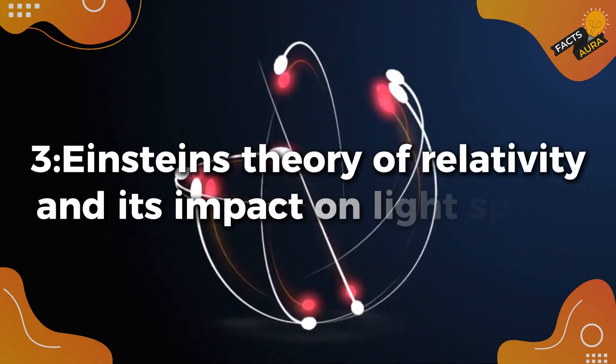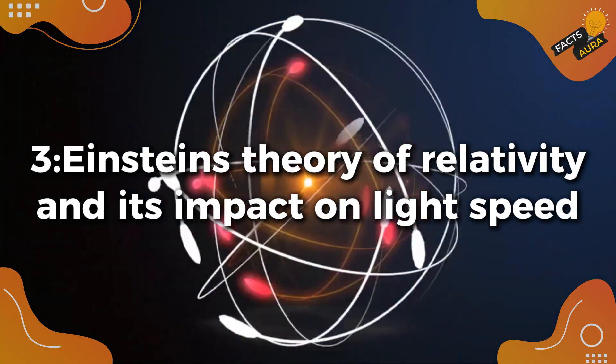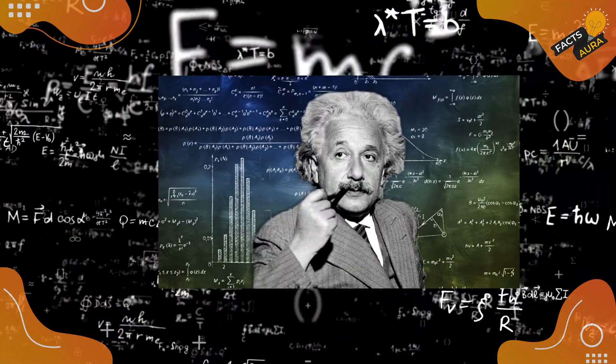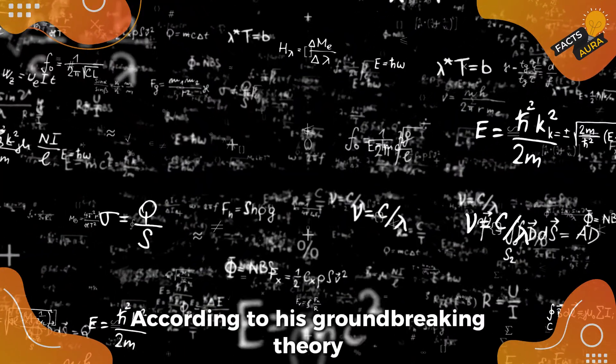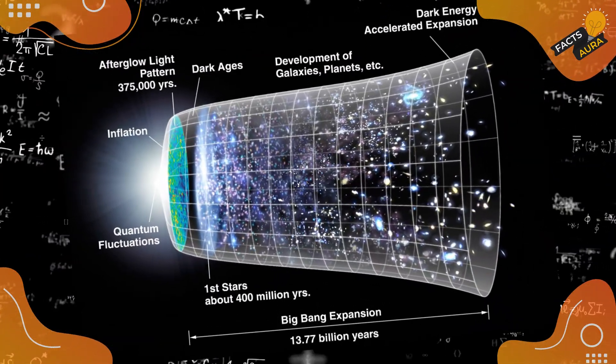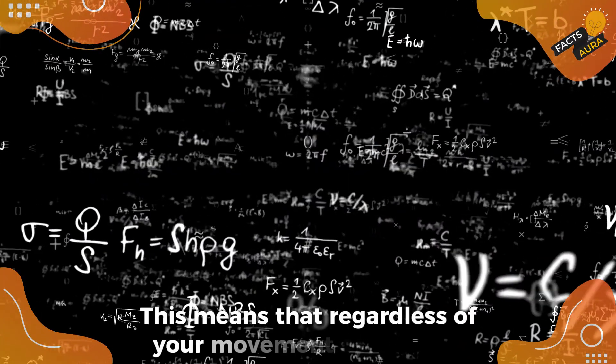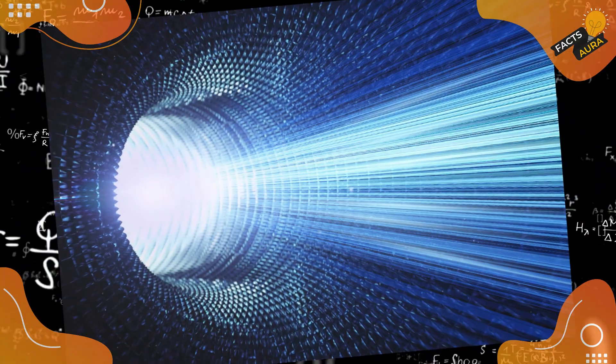Einstein's theory of relativity and its impact on light speed. Albert Einstein's theory of relativity plays a huge role here. According to his groundbreaking theory, the speed of light is a constant in all frames of reference. This means that regardless of your movement or position, you'll observe light traveling at the same speed.